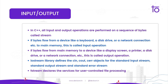The iostream library defines the objects cin, cout, and cerr corresponding to the standard input stream, standard output stream, and standard error stream. The fstream library declares the services for user-controlled file processing.